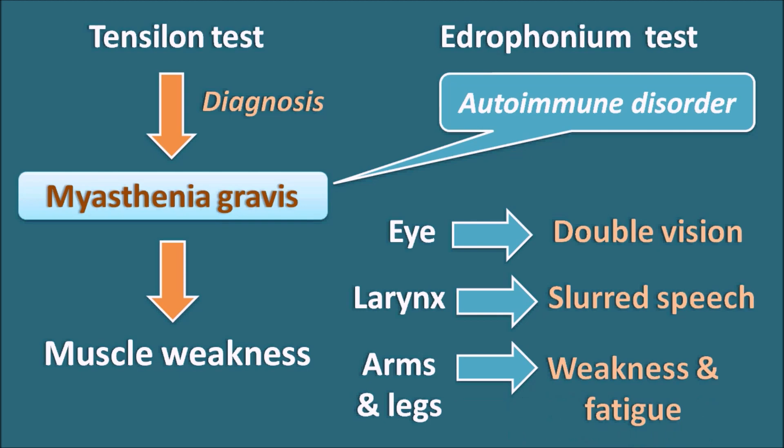In order to diagnose myasthenia gravis, the quick Edrophonium test is used, which is widely known as the Tensilon test. In this video, we will see what the Tensilon test is, how Edrophonium can be used for this diagnosis, and how it is administered.